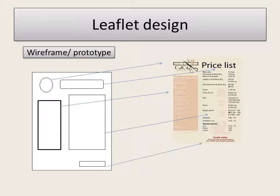What we'd normally do if we were designing a leaflet is produce a wireframe or a prototype — a very simple layout of what it would look like. On the left hand side, we've got a basic Word document with shapes: a circle and rectangles to show where information would go. We've then used an actual price list to demonstrate how the layout's going to look. This is what all designers would do, and this is what you're going to need to do when it comes to your coursework.